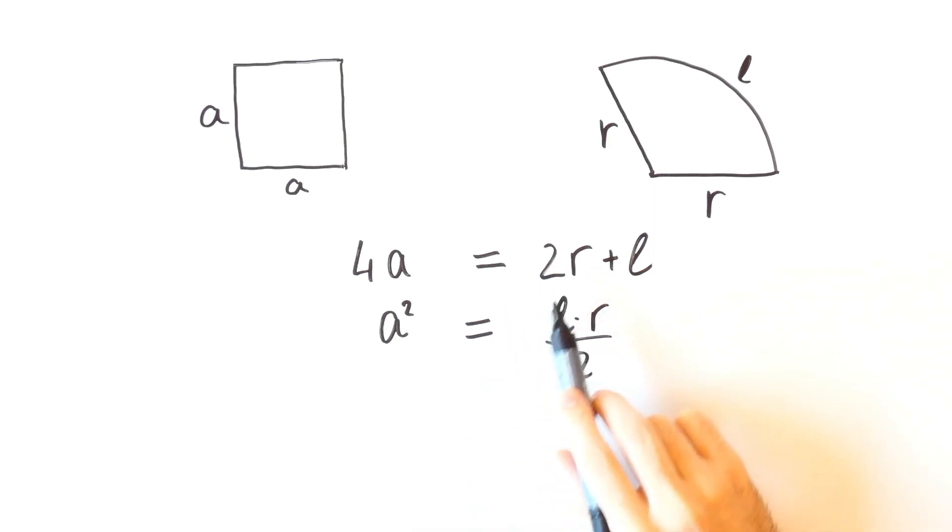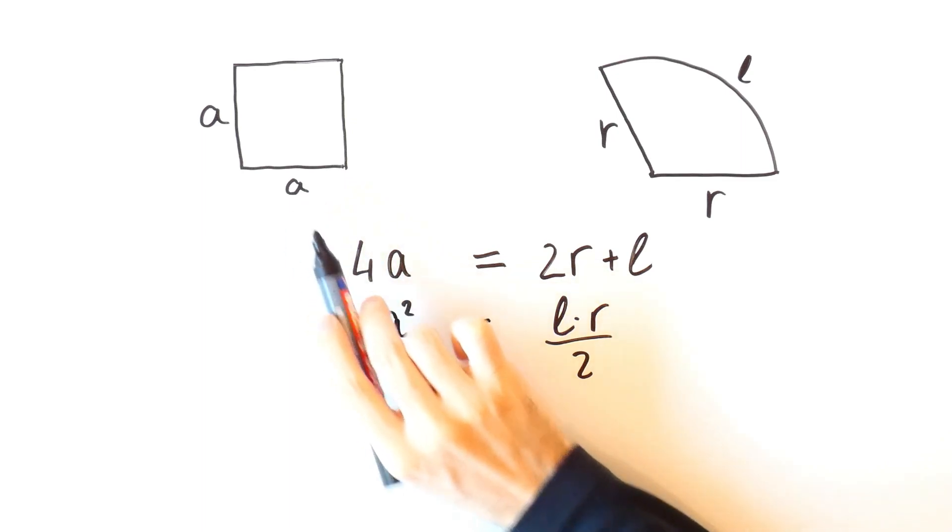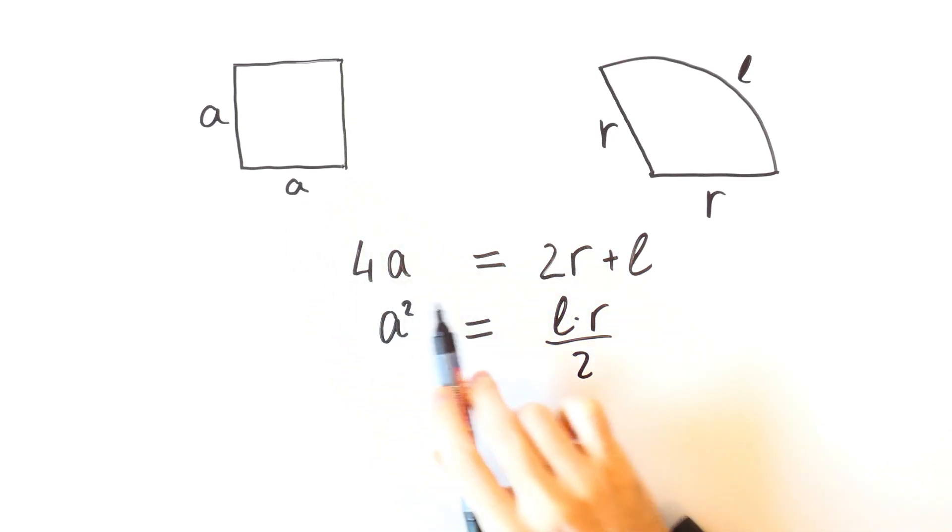Here we have two equations and two unknowns, R and L. Remember that we started with a given square, so each side A is known. Now we will find R and L in terms of A.